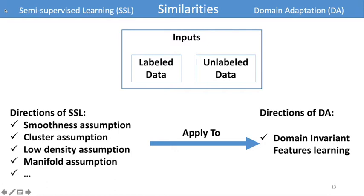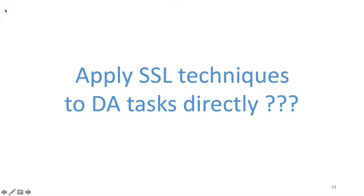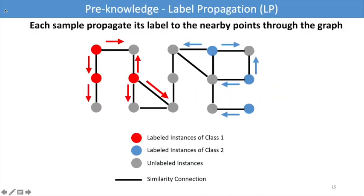Thus, our problem arises naturally: Is it okay to apply SSL techniques to domain adaptation tasks directly? We investigate this problem based on the semi-supervised learning algorithm of label propagation. In LP, we first construct a similarity graph with all data, where the nodes are data instances and edges are the similarity between them. To label the unlabeled data, we propagate the labels of labeled data to the nearby points through the graph.